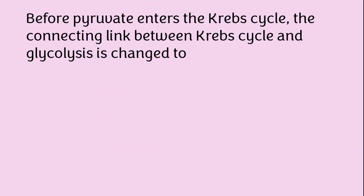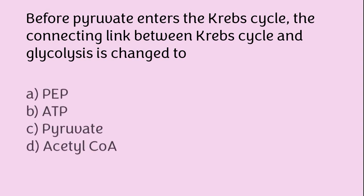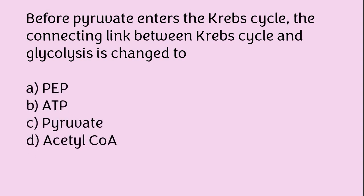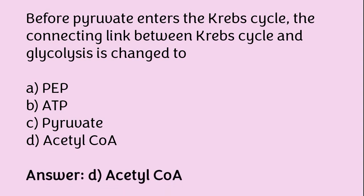Before pyruvate enters the Krebs cycle, the connecting link between the Krebs cycle and glycolysis is changed to: FADH2, ATP, pyruvate, or acetyl-coenzyme A? The correct answer is option D — acetyl-coenzyme A.